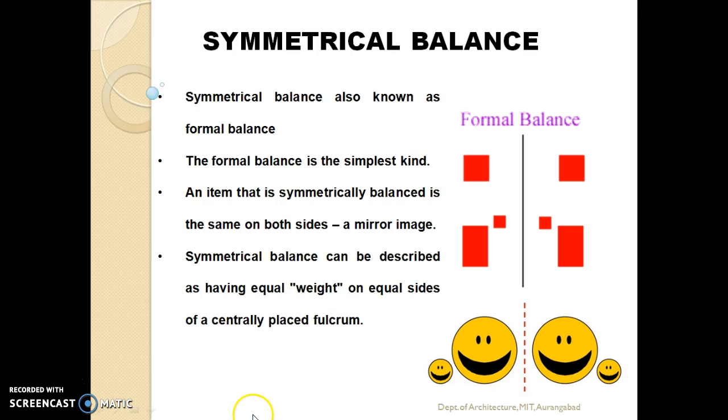The balance can be divided into different types. The first type of balance that we see today is symmetrical balance, also called formal balance. The formal balance is the simplest kind. An item that is symmetrically balanced is the same on both sides or a mirror image, as you can see here in the figure. Symmetrical balance can be described as having weight on equal sides of a centrally placed fulcrum.